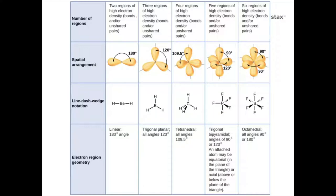If you have three regions of electron density — such as boron trihydride or formaldehyde with a C double bond to O and two hydrogens — they take on a trigonal planar geometry with a bond angle of about 120 degrees to get minimal repulsion and maximum distance. That double bond between carbon and oxygen is considered just one region of electron density.